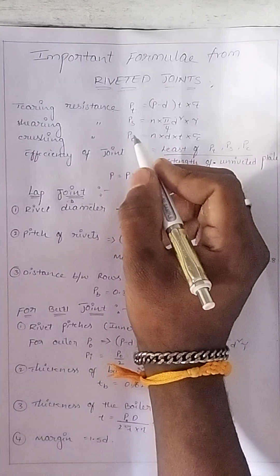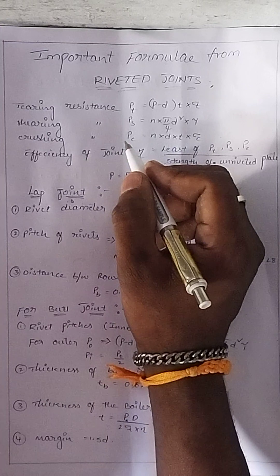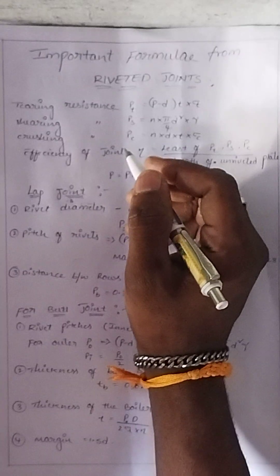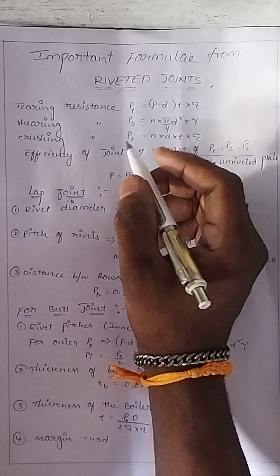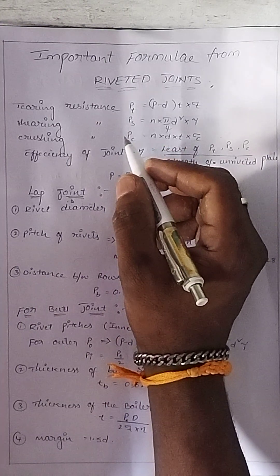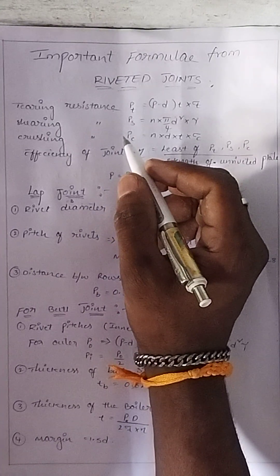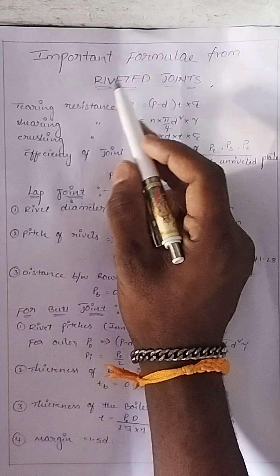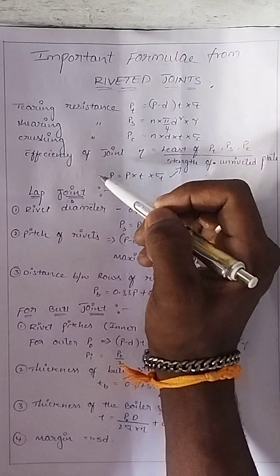Hi friends, welcome back to our YouTube channel. This is Pavan Kumar. Today we are going to discuss the DM subject for B.Tech third year mechanical students. From this subject, I'm explaining the third chapter — specifically the important formulas from riveted joints.